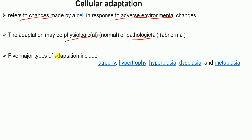There are five major types of cellular adaptation: atrophy, hypertrophy, hyperplasia, dysplasia, and metaplasia. I'm going to discuss all of these in detail.